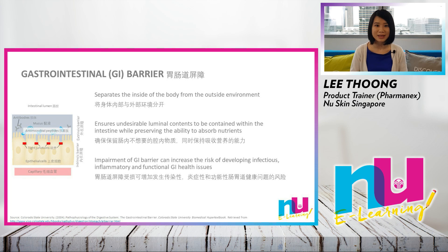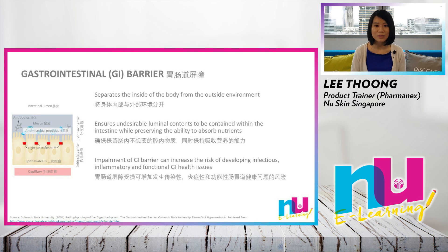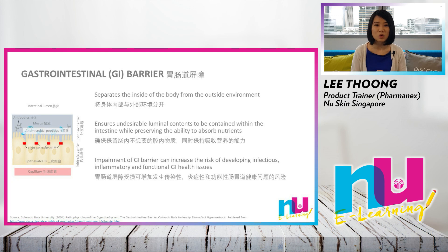The GI barrier is composed of the intrinsic barrier, which consists of epithelial cells and tight junctions that tie them together, and the extrinsic barrier, which consists of secretions and other influences including mucus, cytokines, anti-microbial peptides, and antibodies that help maintain barrier functions. This GI barrier ensures undesirable luminal contents are contained within the intestinal lumen while ensuring nutrients are absorbed into the body.